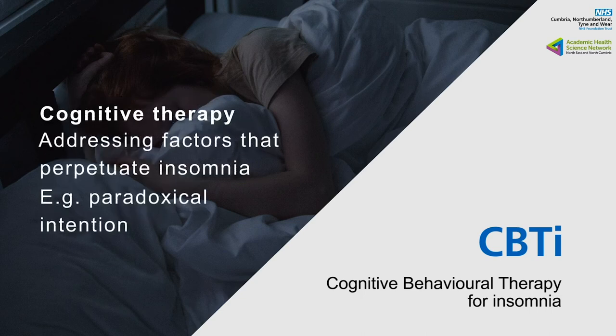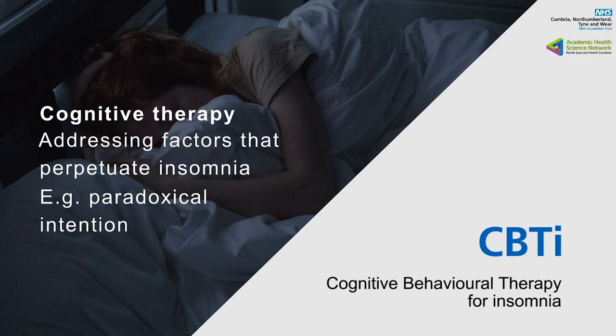Cognitive therapy involves addressing factors that perpetuate insomnia — often maladaptive habits which differ from the original precipitator of insomnia. An example of this is paradoxical intention, where the patient actively tries so hard to get to sleep that they end up making themselves more awake. The best sleepers sleep without any effort. Trying to distract patients from the fact that they can't sleep is important. Techniques include finding a relaxing, non-stimulating activity — such as getting out of the bedroom and reading a book or eating a light snack. Instead of dwelling on being unable to sleep, patients are encouraged to think about the benefits of being awake at that time.